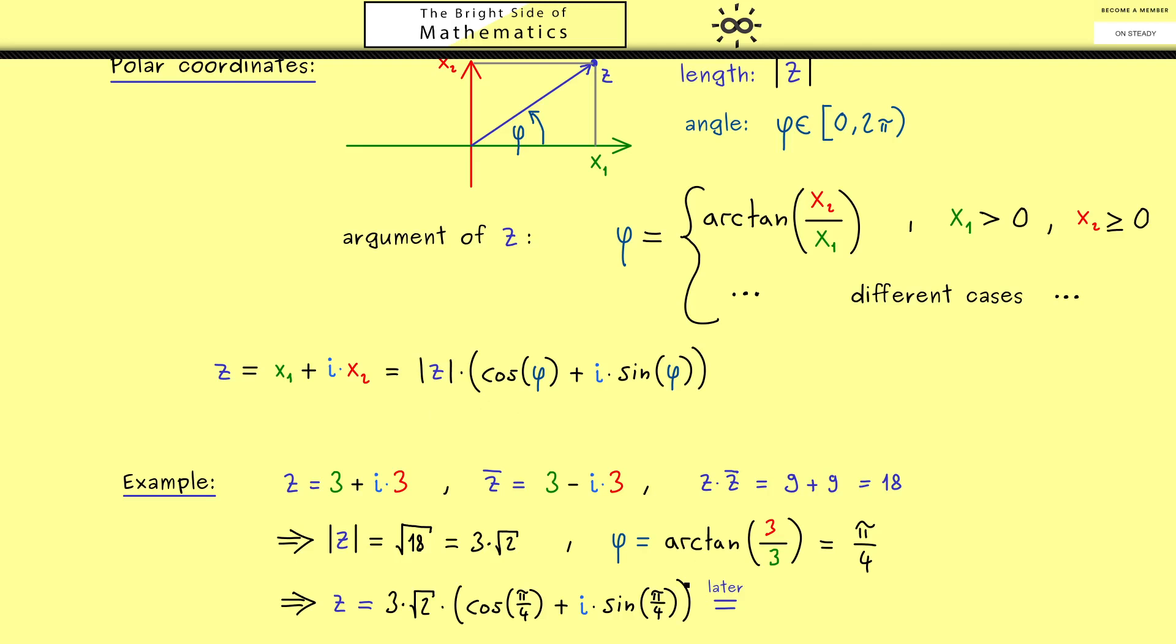Now later in my complex analysis series you will see that we can rewrite everything in these parentheses. So cos plus i sin as an exponential function. In fact this is written as e to the power i times π over 4. At first this might look strange but later you will see that this can be very helpful for a lot of calculations. Because it's a very short notation.